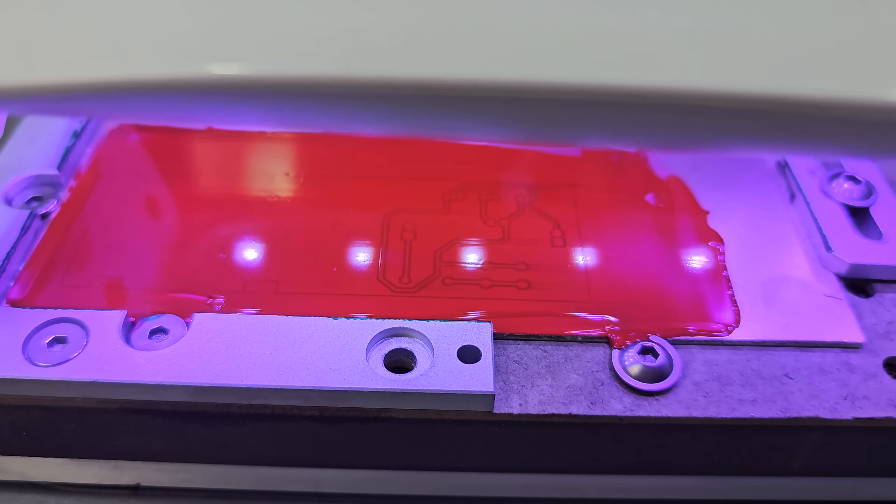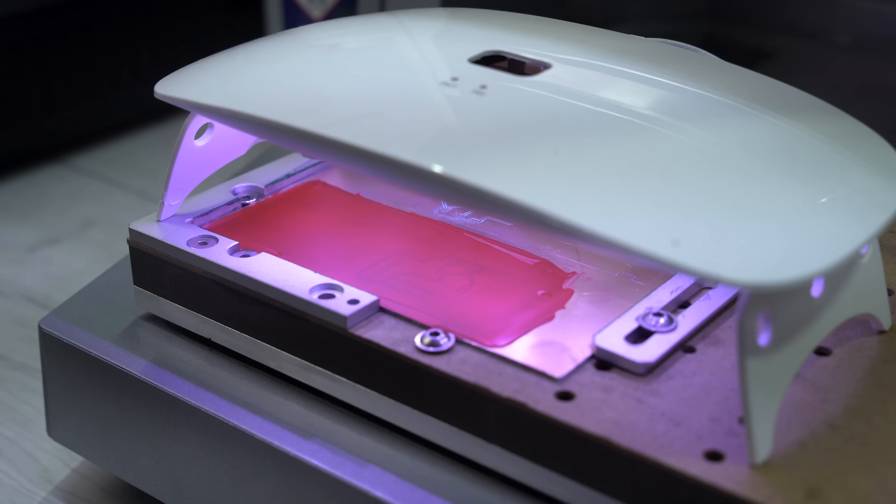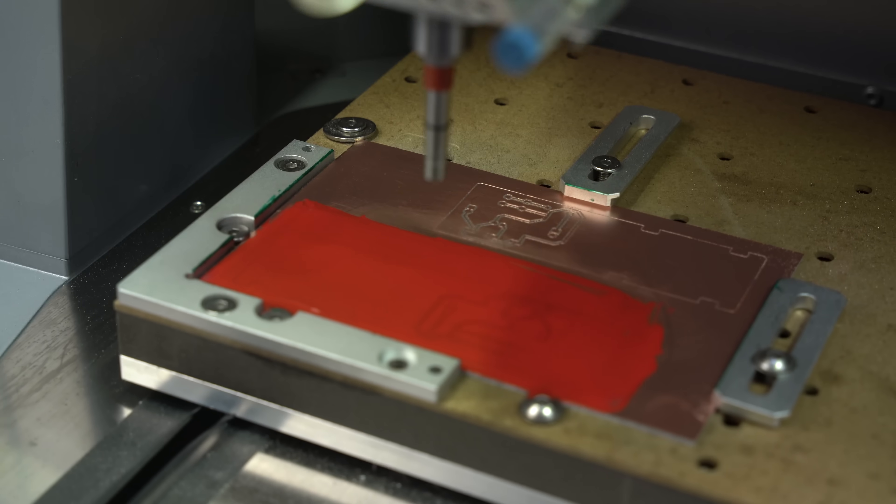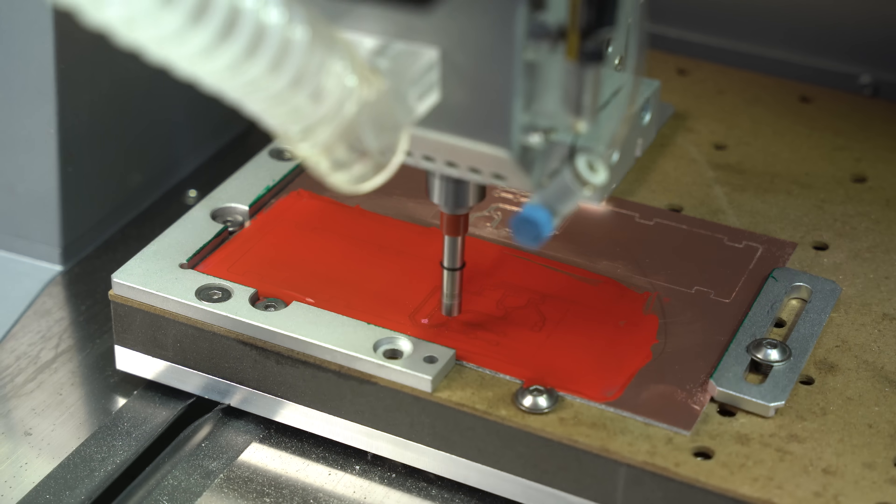To cure the resin quickly, I use a UV lamp. In about 30 minutes, the PCB is fully covered. Unfortunately, we can't isolate the pads during the resin application, so that step comes later.